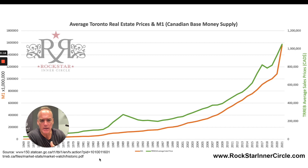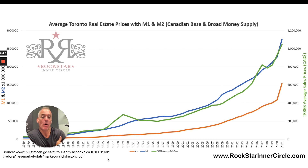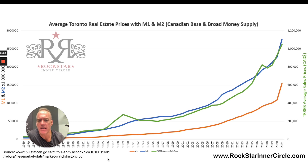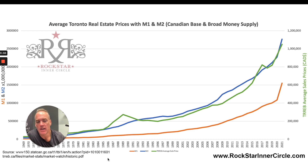If we look at this in more detail, here is M1 and now M2. M2 is considered broad money supply — M1 is the base money of a country, M2 includes other things like money market funds, savings accounts, and so on. You can see how Stats Canada defines it at that URL. If we change the scale to get M2 onto this chart on the left-hand side, you can see that real estate prices map almost exactly to the growth of money supply.